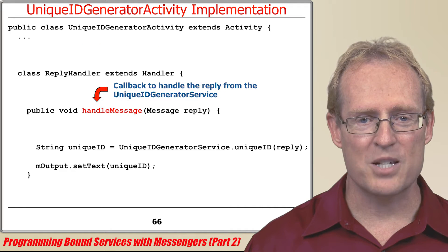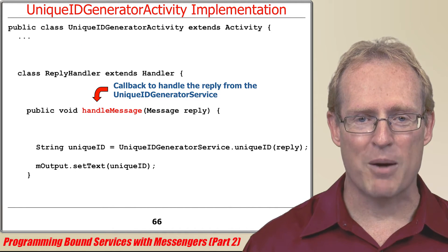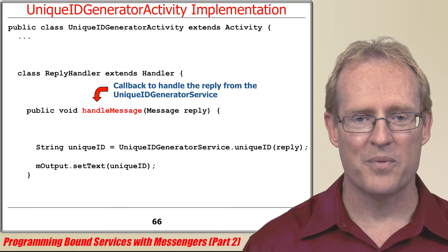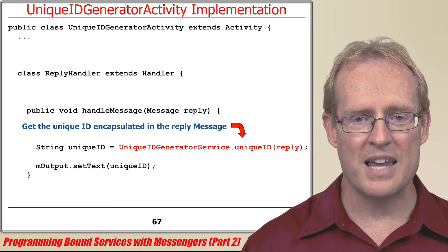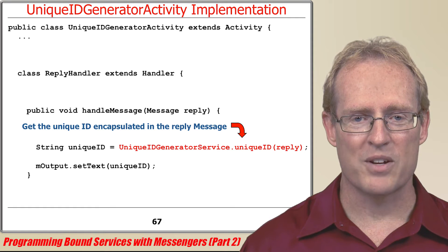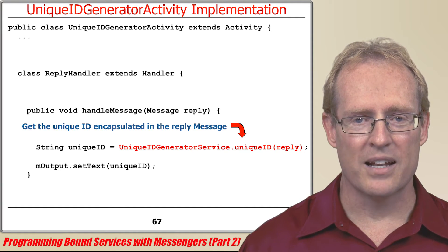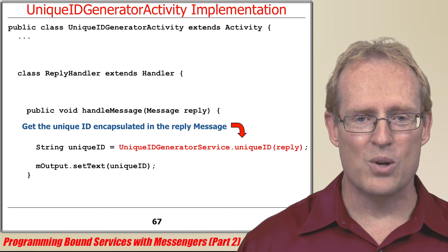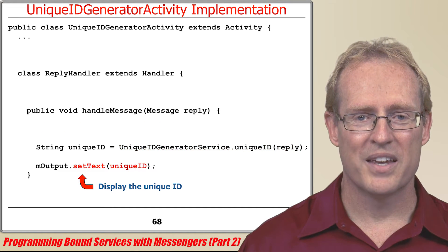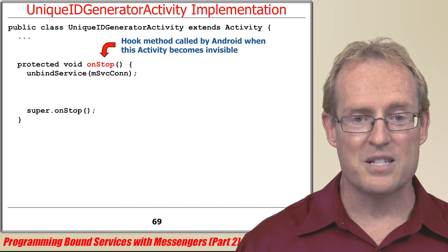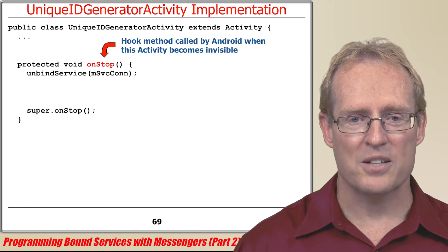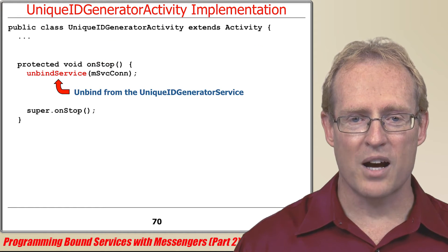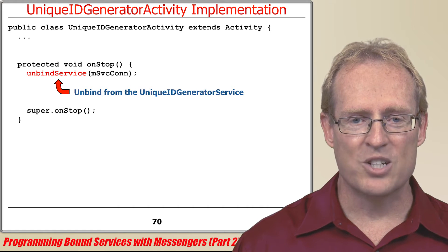When the service sends this reply, the binder framework and handler framework collaborate to dispatch the handleMessage hook method, which invokes the uniqueID helper method defined in the unique ID generator service to extract the unique ID encapsulated in the reply message. This helper method shields the activity from the details of how the reply message is implemented. The unique ID is then displayed on the screen. When the unique ID generator activity is completely obscured by another activity, the Android activity framework dispatches the activity's onStop hook method, which calls unbindService to disconnect from the unique ID generator service.